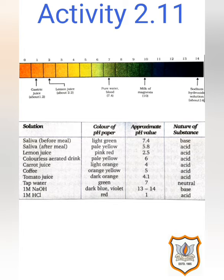Lemon juice — we know it is an acid. The color of the pH paper will be pink-red and the pH value is 2.5, acidic in nature. Colorless aerated drink: the color of the pH paper will be pale yellow, pH value 6, and it is acidic. Carrot juice: the color of the pH paper is light orange, pH value is 4, acidic in nature as it is less than 7.